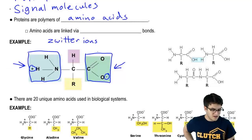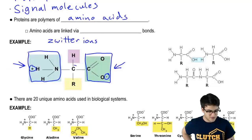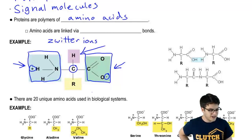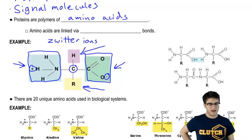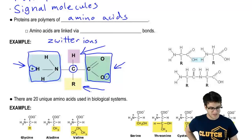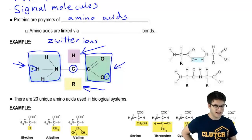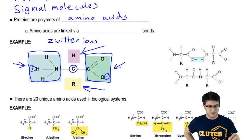Now, amino acids also have attached to their central carbon here a hydrogen and what's called an R group. The R group is what makes each amino acid unique. The rest of the molecule is a shared structure between all amino acids.